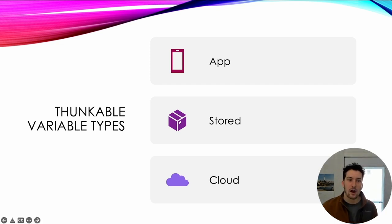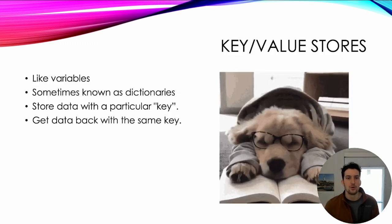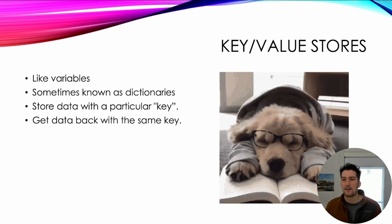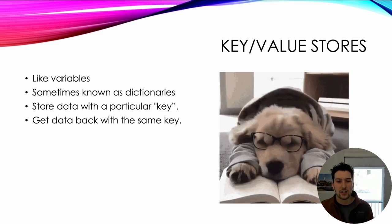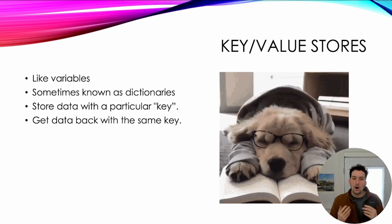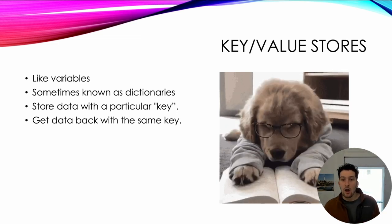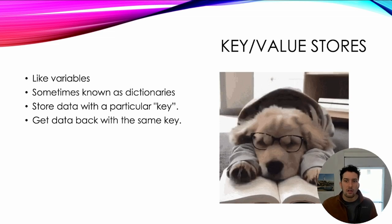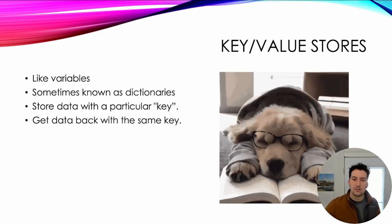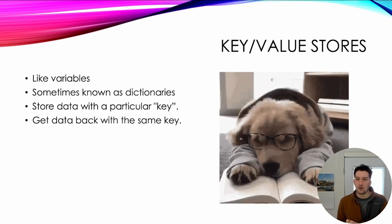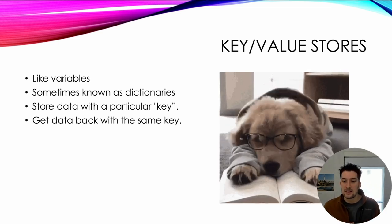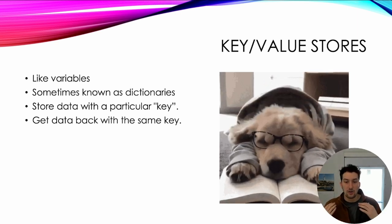The next thing I want to talk about are key-value stores. Key-value stores are kind of like variables — sometimes we want to store data to be accessed later. A common term for this in programming is dictionaries or hash maps. I like the idea of it being like a dictionary: when we need to find the definition of a word, we look it up by the word itself — the word is the key that we use to unlock getting the definition back. Key-value stores are very powerful because they can store lots of data but take up a very small footprint in your code, and you can name the data you're storing with a key and get it back using that key.